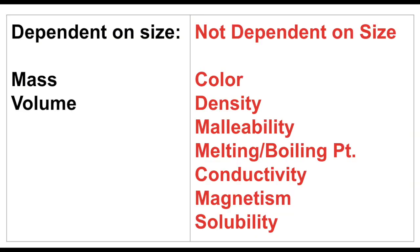Properties can also be categorized in two different ways — they're either dependent on size or they're not dependent on size. So if you have a big piece of copper, its mass and volume would change, but its color will still stay that goldenish brown. Its density would still stay the same, and it would be very malleable and would still conduct electricity. So those are properties that are not dependent on size.